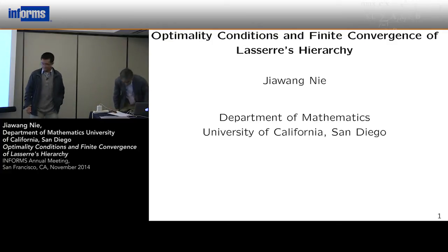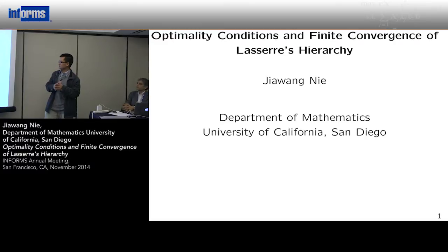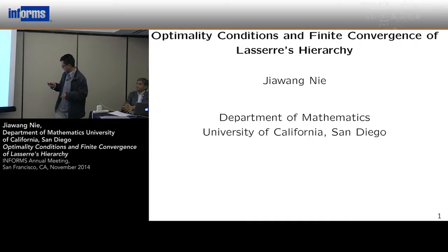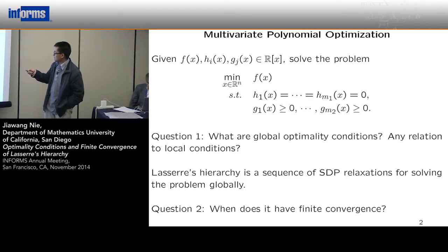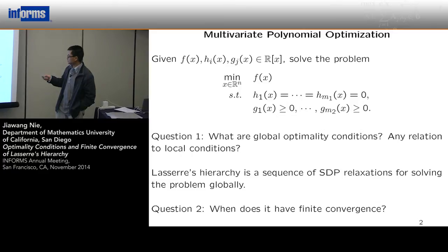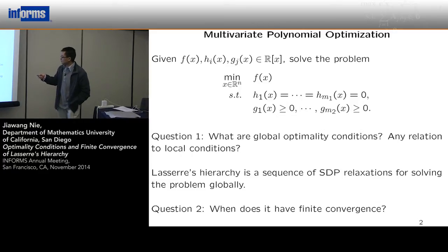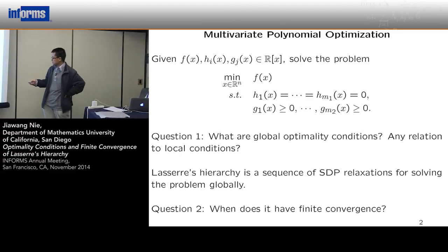Thank you very much. I'm going to present this work. The purpose of this talk is to investigate the relationship between optimality conditions and the finite convergence of the Lasserre hierarchy. We consider this general polynomial optimization problem: minimize a polynomial function f subject to equality constraints and inequality constraints, where everything is polynomial. The typical method for this is the SOS hierarchy, which is a sequence of nested semi-definite relaxations for solving the problem globally.